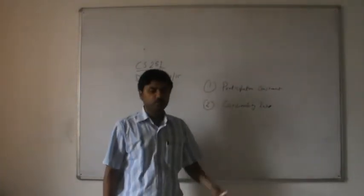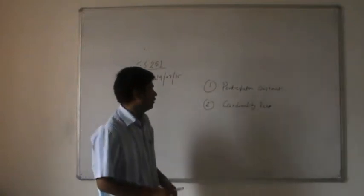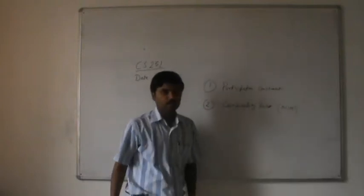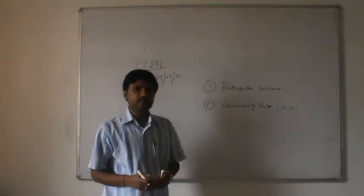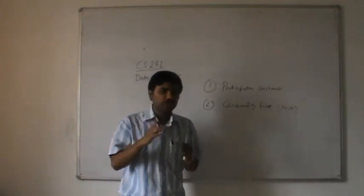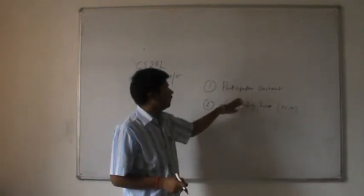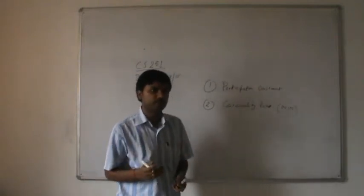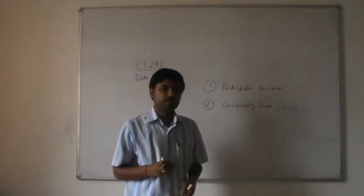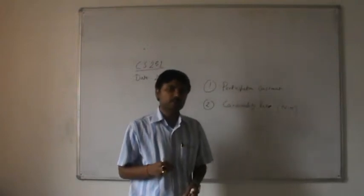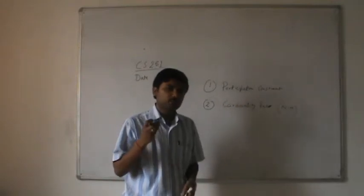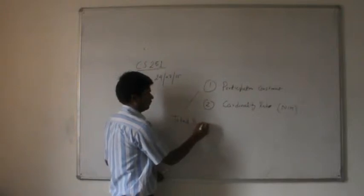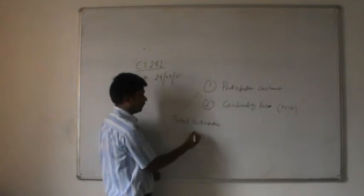We have discussed what is the cardinality ratio. We have also discussed what is the participation constraint. For an example we discussed M to N. This constitutes the participating entities in the relationship among different entity types. We also discussed total participation constraints with an example of the project-department relationship, where there is not any project which is not associated with some department. If all projects are associated with some department, then it is total participation, represented with the help of double lines.